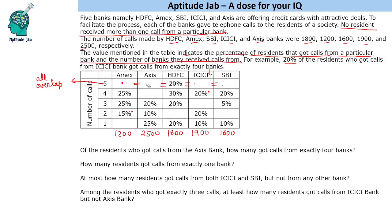Because if a person is getting calls from MX and all five banks, then X's bank should also have that same number, HDFC should also have it, ICICI, and SBI too. For HDFC we know this number, which is 360. So that means 360 people got calls from all five banks — the same 360 people got calls from MX, X's bank, HDFC, ICICI, and SBI.